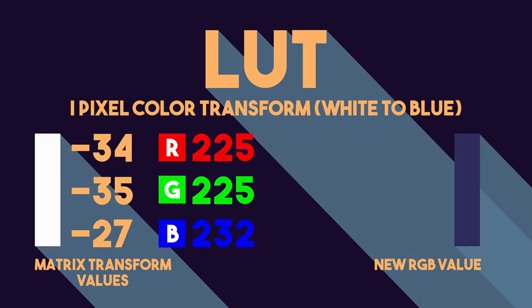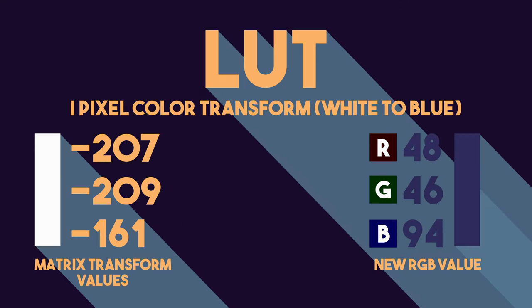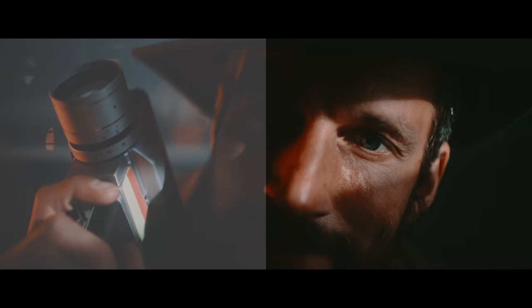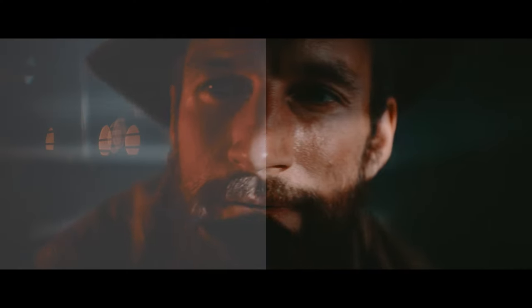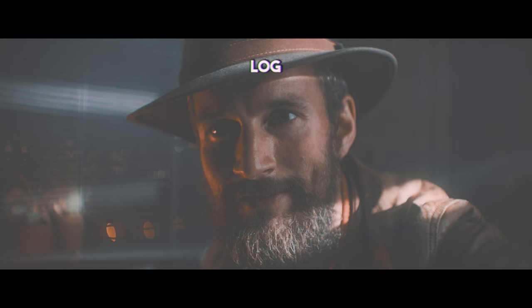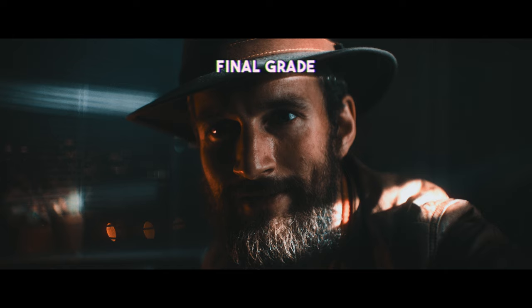A lookup table, or a LUT, is a mathematical formula to remap the RGB and luminance values of your image to create a more well-defined color grade. And we love this because with one click, you can have a conversion from something like log, an overall style to unify your footage, or even the final grade.